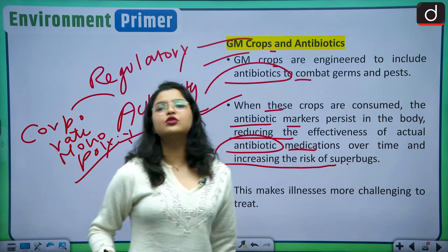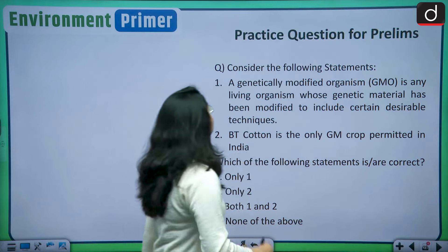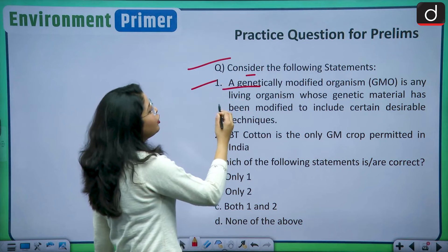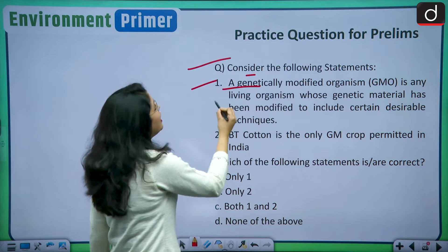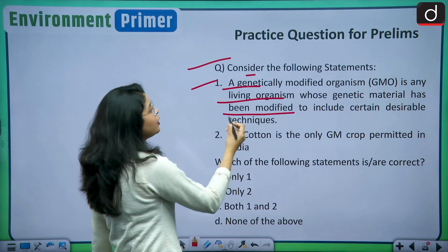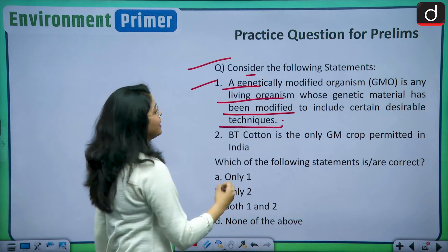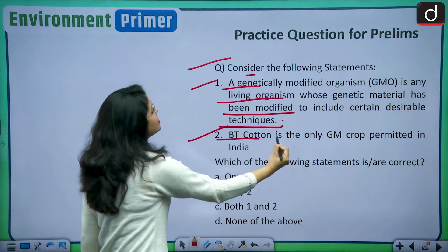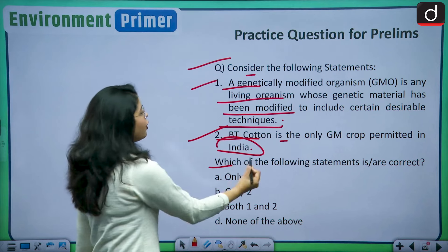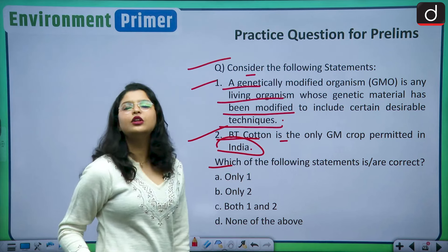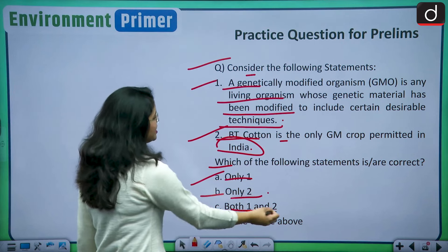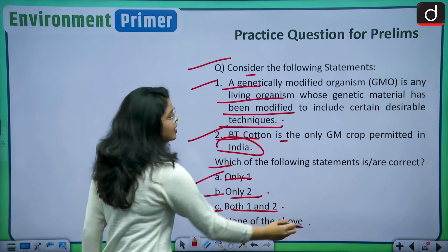Let us discuss a practice question for your prelims examination. Consider the following statements: Statement one — a genetically modified organism or GMO is any living organism whose genetic material has been modified to include certain desirable traits. Statement two — BT cotton is the only GM crop permitted in India. Which of the following statements are correct? Option A: only one, Option B: only two, Option C: both one and two, Option D: none of the above. Kindly drop your answers in the comment box below.